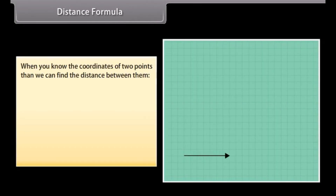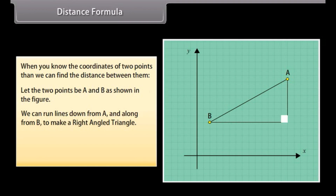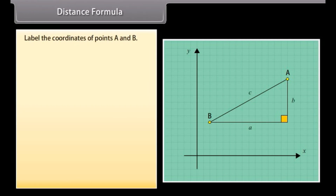Distance formula: When you know the coordinates of two points, we can find the distance between them. Let the two points be A and B as shown in the figure. We can run lines down from A and along from B to make a right-angled triangle. Now using Pythagoras theorem, we get A squared plus B squared is equal to C squared. Now label the coordinates of points A and B.